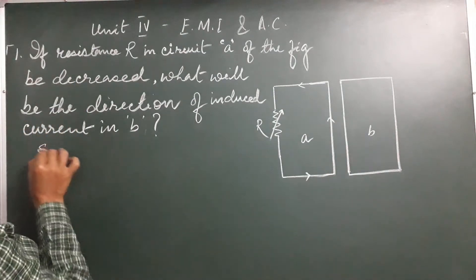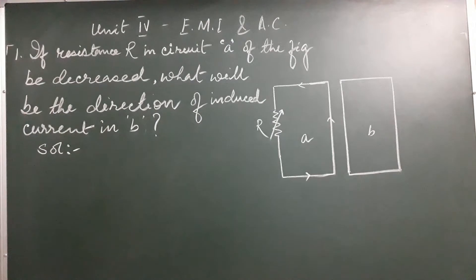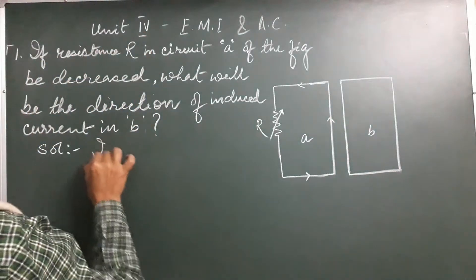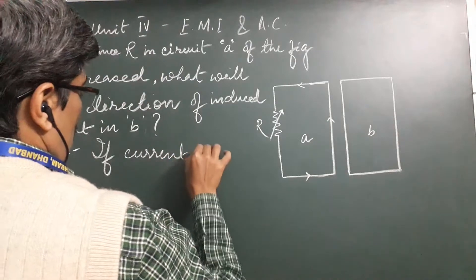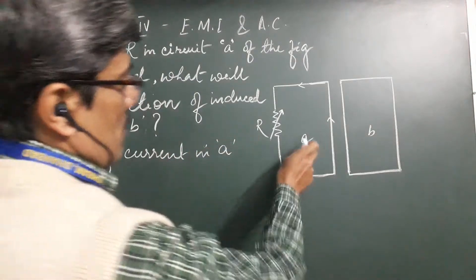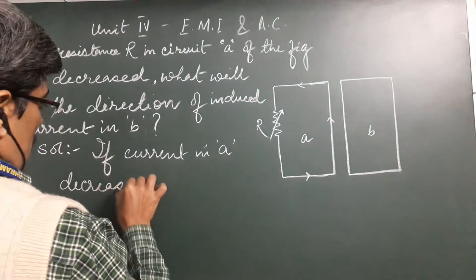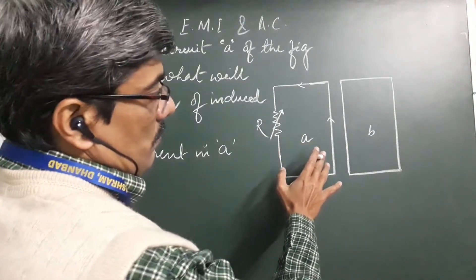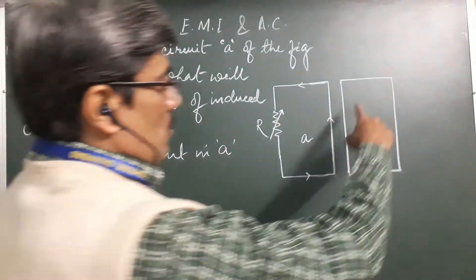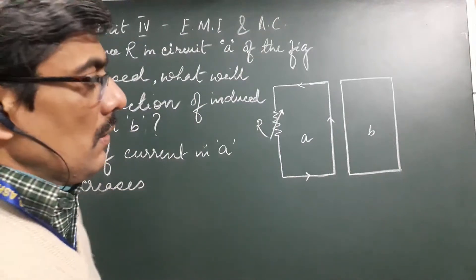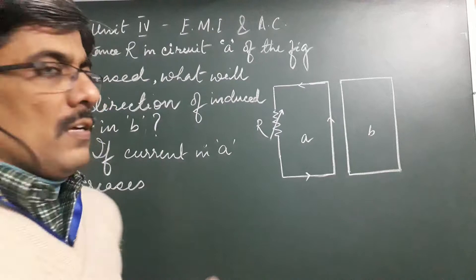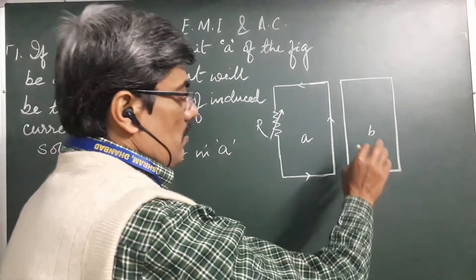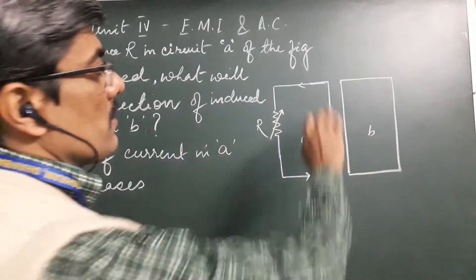How do you solve this? In the question, it's given that the current is flowing in an anticlockwise direction and is decreasing. If the current in circuit A decreases, we know there will be a change in magnetic flux. This change in magnetic flux will be linked with loop B, and accordingly there will be an induced EMF and therefore a flow of current. Because this part is closed, according to Faraday's law of electromagnetic induction, there must be an induced EMF and a current flowing.